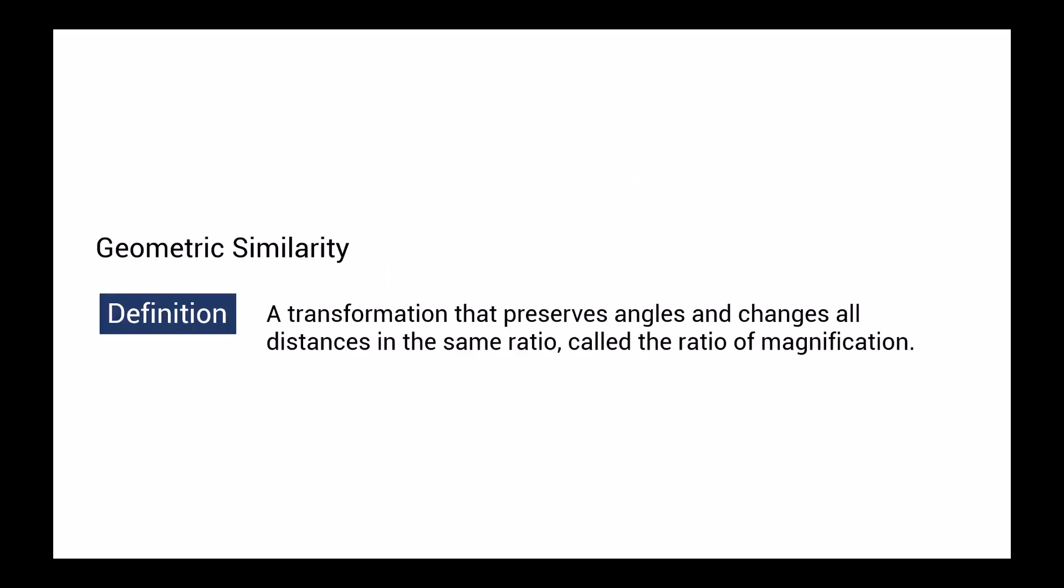Geometric similarity is a transformation that preserves angles and changes all distances in the same ratio, called the ratio of magnification.